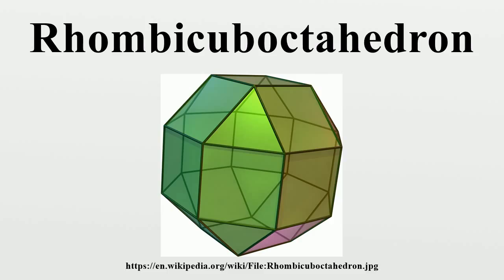Spherical tiling: The rhombic arboctahedron can also be represented as a spherical tiling and projected onto the plane via a stereographic projection. This projection is conformal, preserving angles but not areas or lengths. Straight lines on the sphere are projected as circular arcs on the plane.